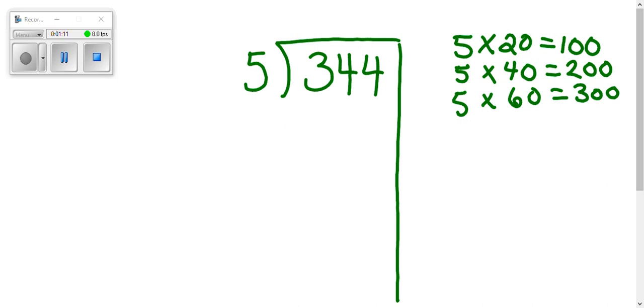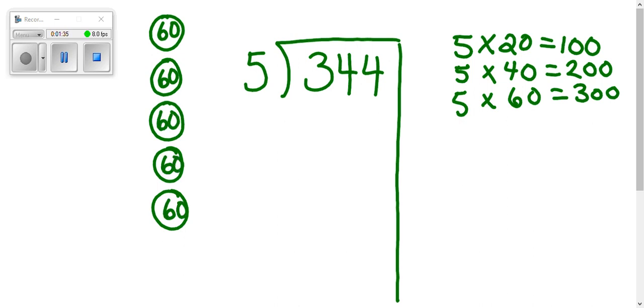So what we're explaining to the kids is, if this were a word problem, you might say that there are 344 llamas and you're putting those llamas into five pens. And so if we're going to use 5 times 60 equals 300, what we're doing is we're putting 60 llamas in each one of those pens, and so that 60 hangs out right here on the side.